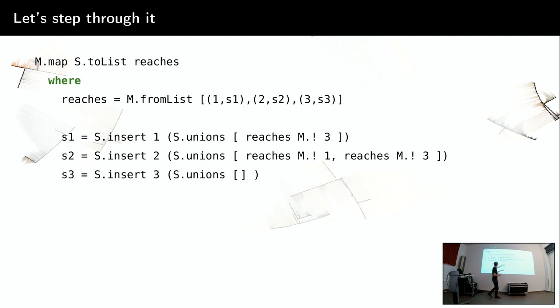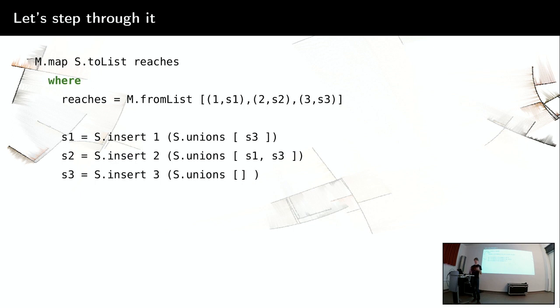And now the magic happens. The next thing we can do is look at reaches index 3. Even though we haven't fully calculated reaches yet, we know enough about it to know that if we look into index 3, we will get S3. And the same for the other indices. This was the magic of knot tying. Because now we're basically at a very normal program. We have some calculations to do and we can calculate S3, and once we know that, we can calculate the other ones and we get the sets that we've seen.